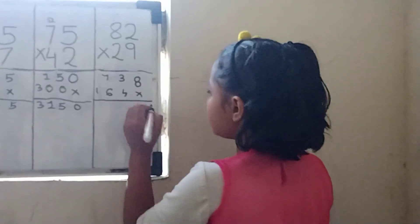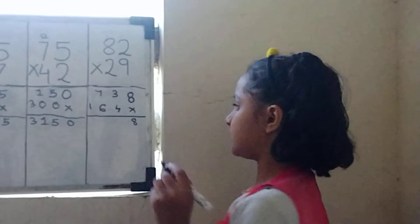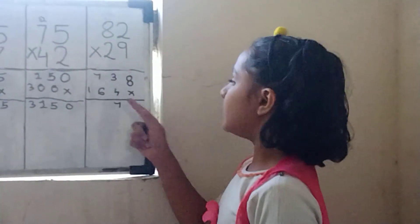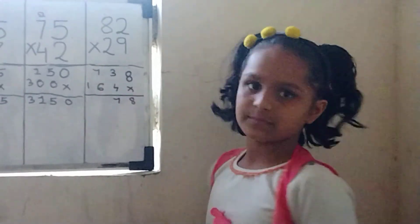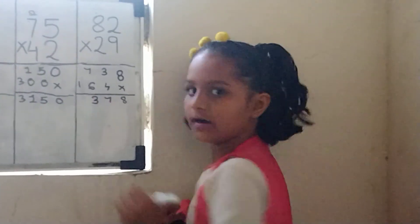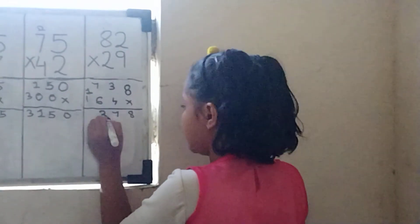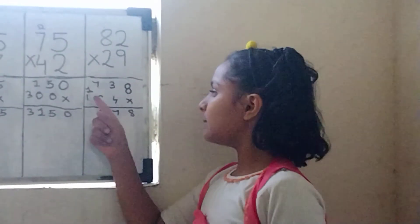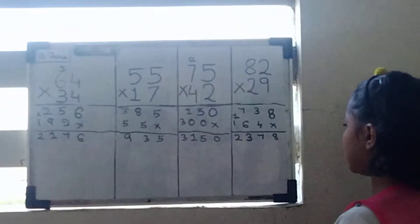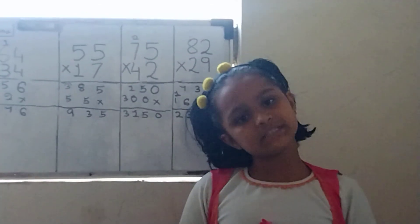Then we will do plus. We will write 8 here, and 4 plus 3 equals to 7. Then 7 plus 6 equals to 13. Then we will write 3 here and 1 will be carried. And 1 plus 1 equals to 2. Then our total answer is 2378. Thanks for watching.